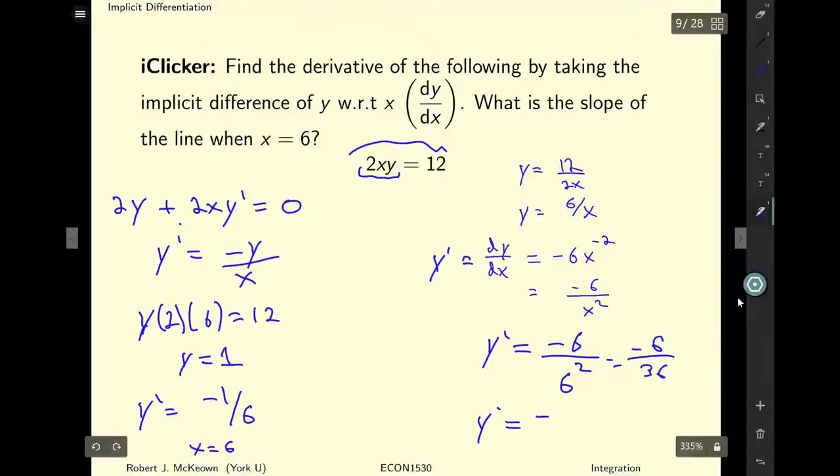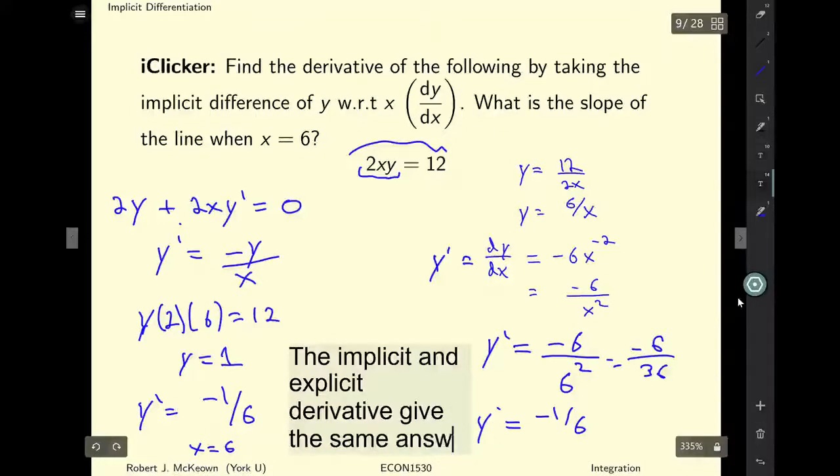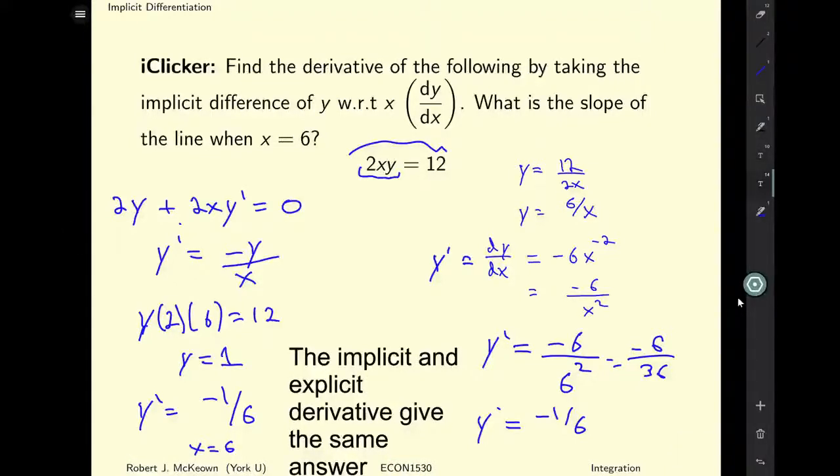And that is equal to negative 1 over 6. So you can see that the implicit and explicit derivative give the same answer. In situations where y can be written as an explicit function of x, it's going to give you the same answer that you would get if you use the implicit differential.